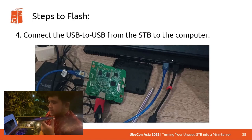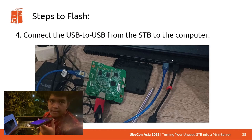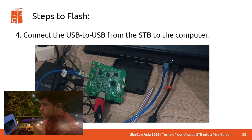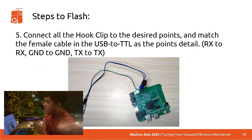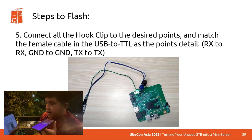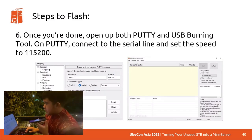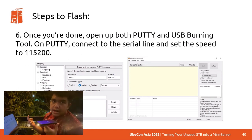Connect the USB to USB from the STB to the computer so we can transfer data and transmit commands to the STB from our computer — there's no way to open shell commands from the STB's GUI. Connect all the hook clip to the desired points and match the female cable to the USB to TTL as follows: RX to RX, GND to GND, and TX to TX. Then open PuTTY or any serial client. Connect to the serial line and set the speed to 115200, which is a common speed used by STB providers.